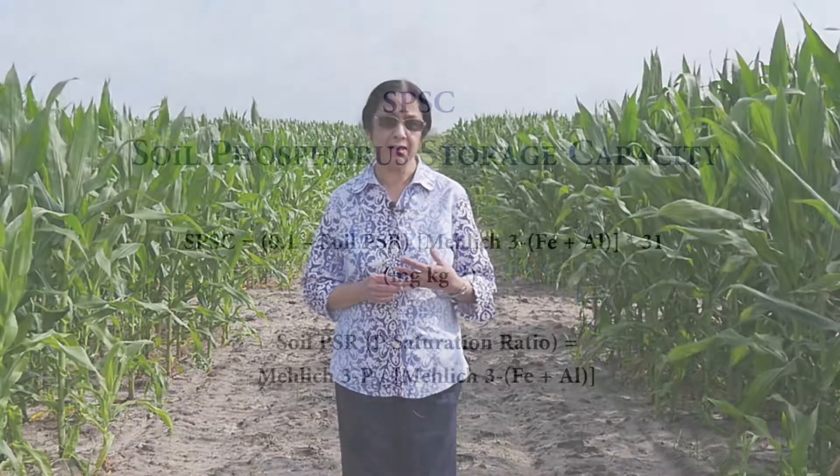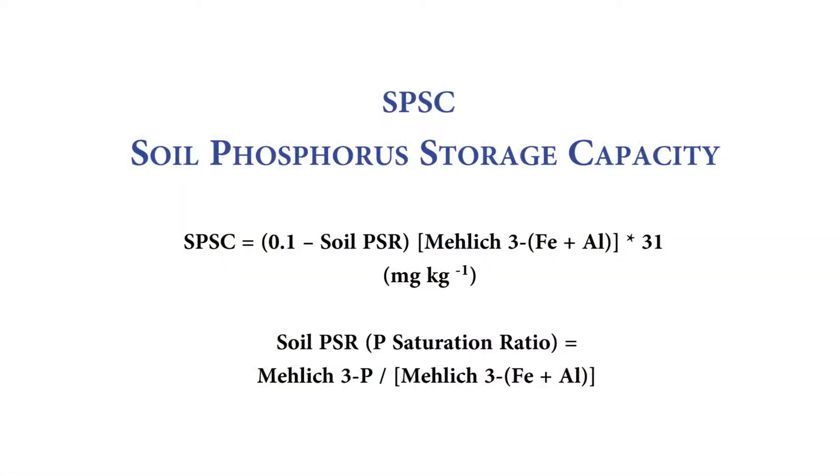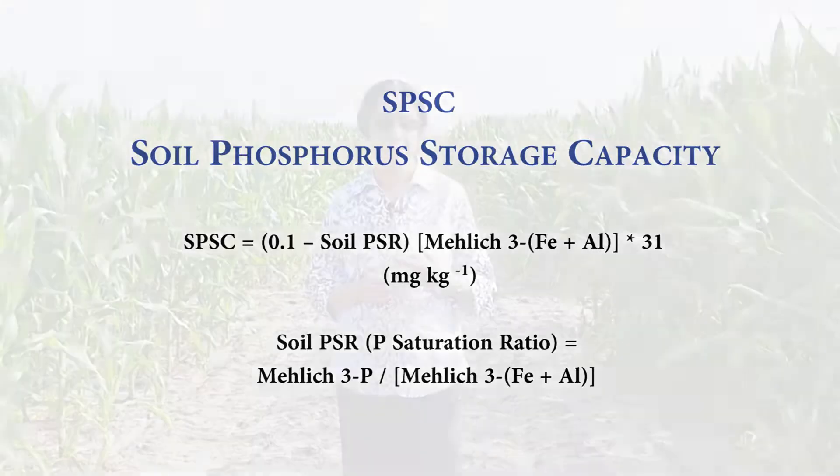The concept, referred to as SPSC, is calculated from phosphorus, iron, and aluminum in a soil test solution such as a Mehlich-3 solution, and is expected to identify sites where P application is needed for plant growth and when P can be mined from the soil by the crop.